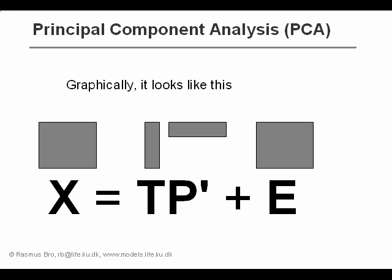So what we've seen so far were two component models. So in that case, the score matrix T would have two columns, and the loading matrix P would have two columns. Or P transpose would have two rows. The residual matrix is the same size as the original data.